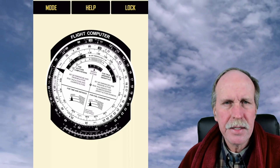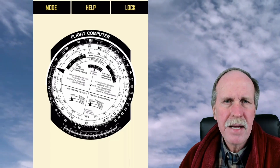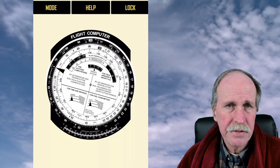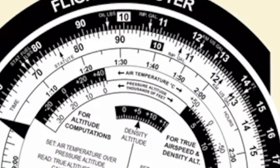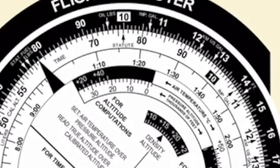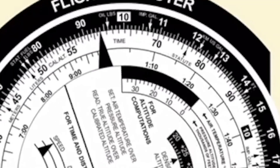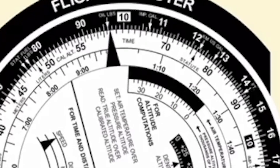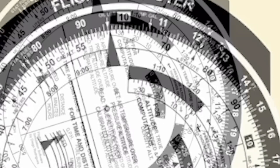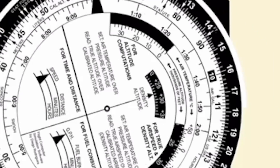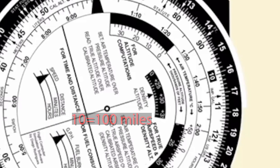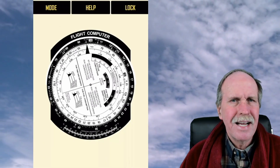The only other thing of note on this side of the E6B is the conversion tables. At the bottom, you can convert degrees Celsius to degrees Fahrenheit. You can also convert statute miles to kilometers — line up the two arrows at the 1 o'clock position, and statute miles will be on the white C scale while kilometers will be on the black D scale. For example, if you come to 10 at about the 3 o'clock position on the white scale and look straight up, you'll see it's a little over 160 kilometers. And those are the functions of this side of the E6B.